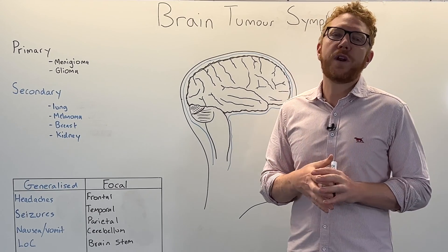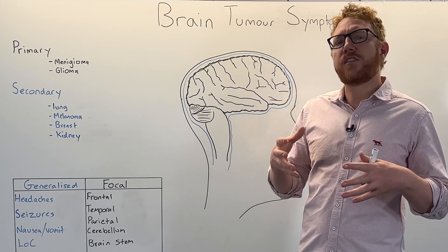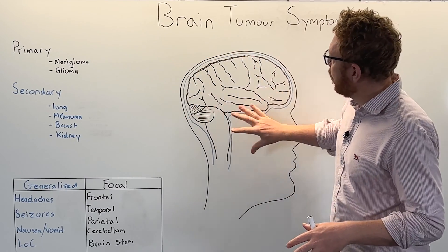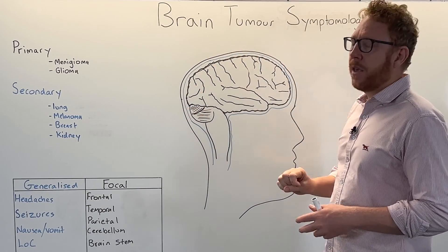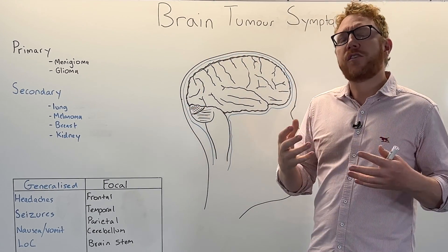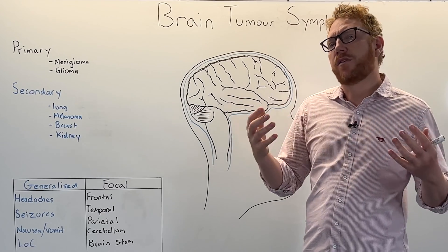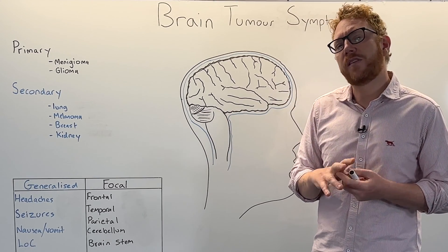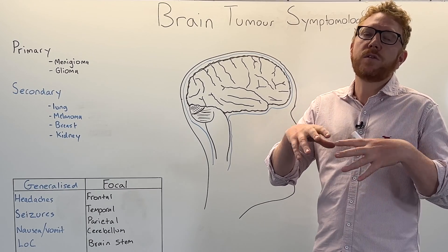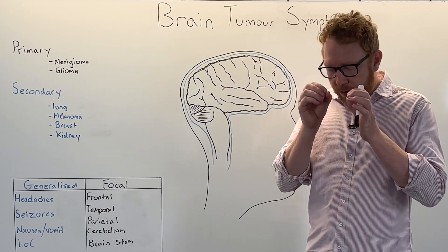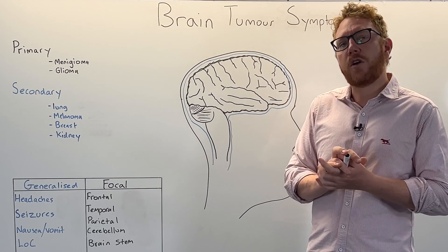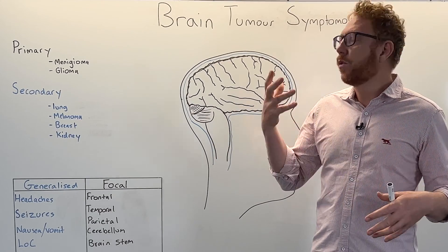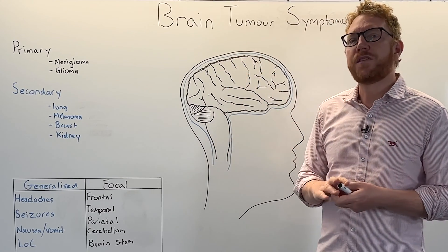A brain tumour is essentially an abnormal growth of cells found within the skull or cranium. Brain tumours are quite varied and diverse - there are over 120 different types. This variation can be due to the cells they originate from, how they look under the microscope which we call histology, their genetic make-up, the grade, or the location of the brain tumour.